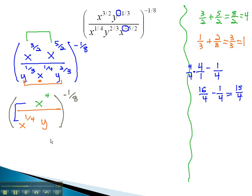This is the new exponent on x, and because it's positive, x to the 15-fourths is in the numerator, and y is in the denominator. All of this with negative 1-eighth as the external exponent.